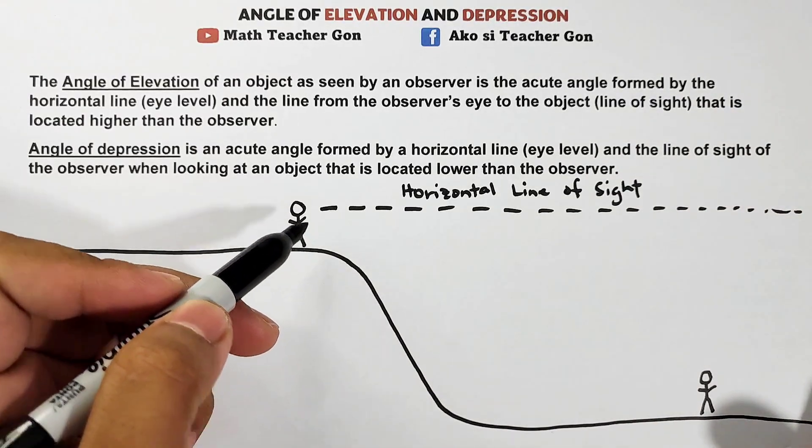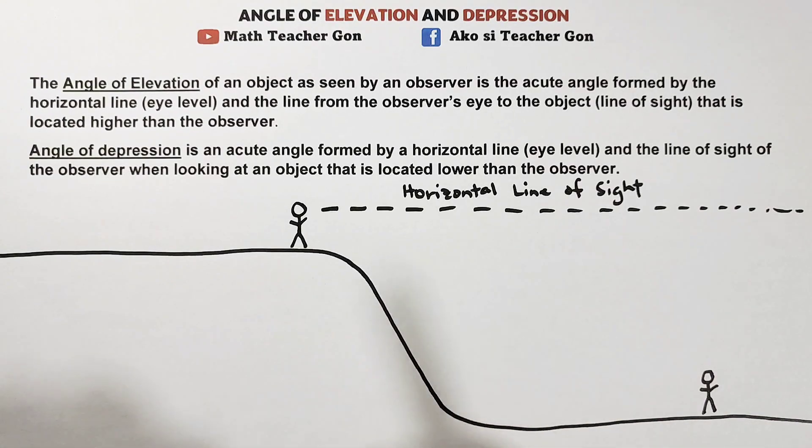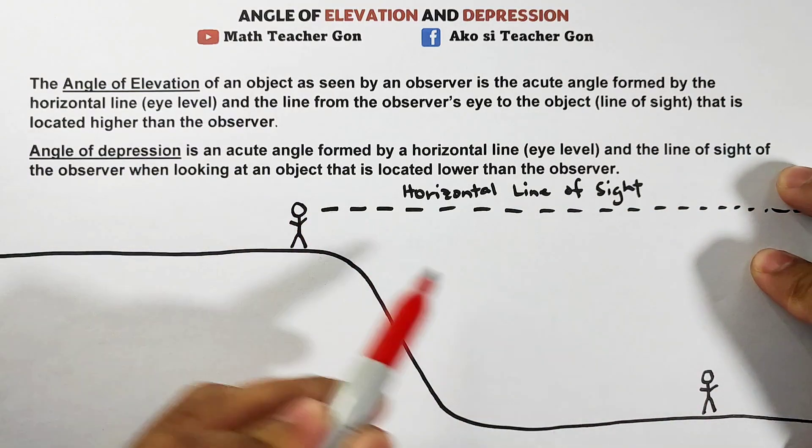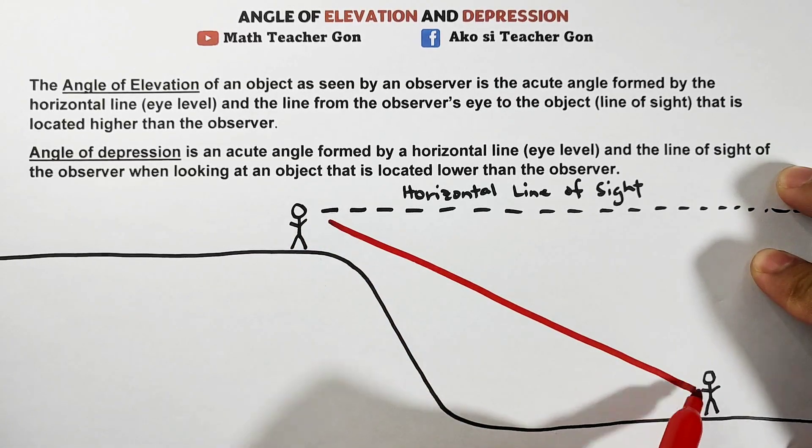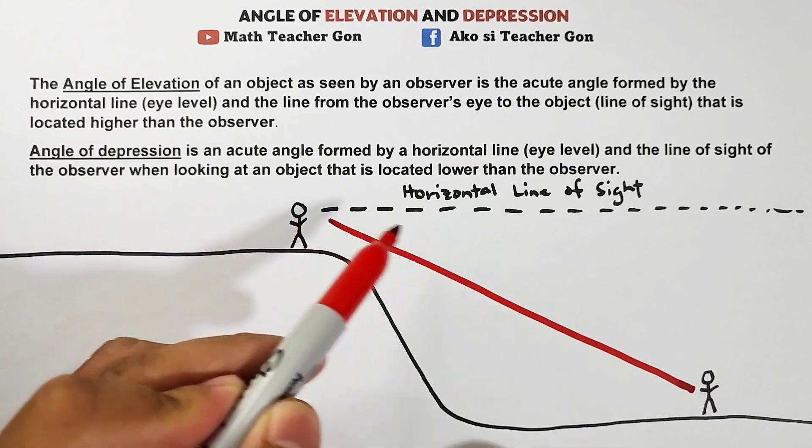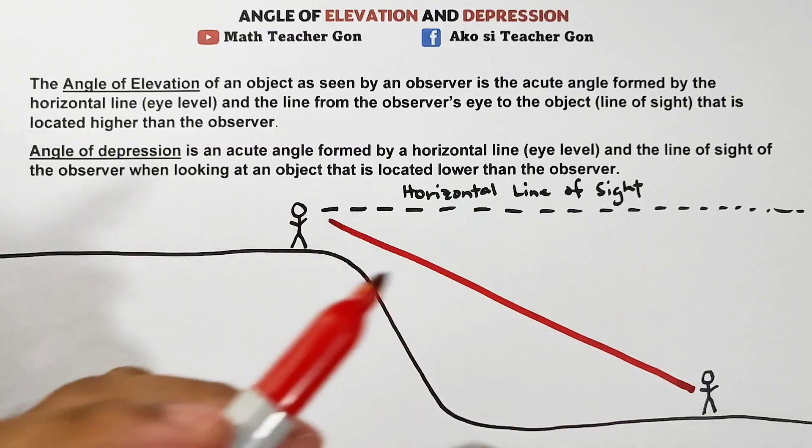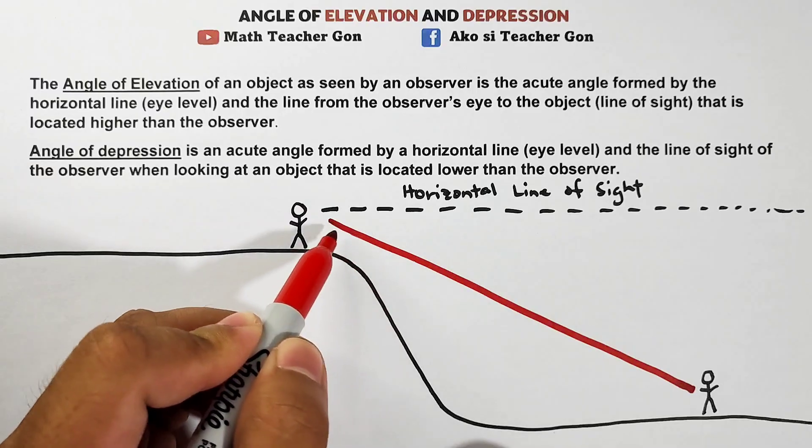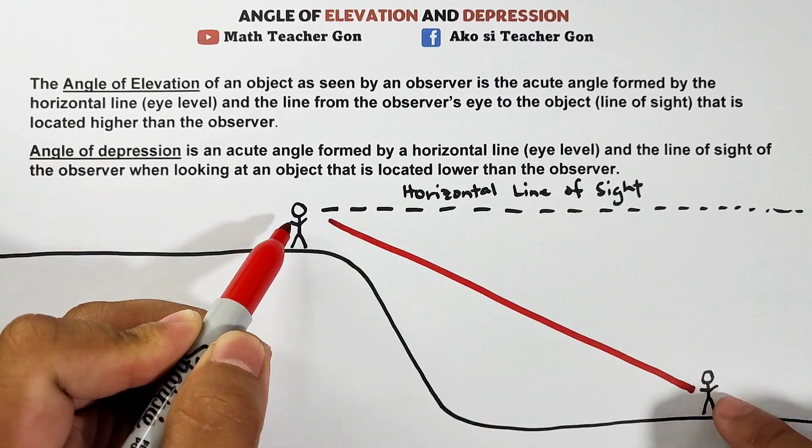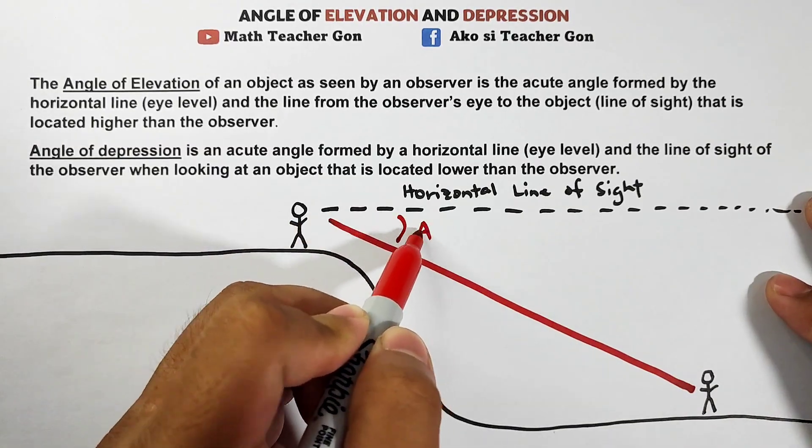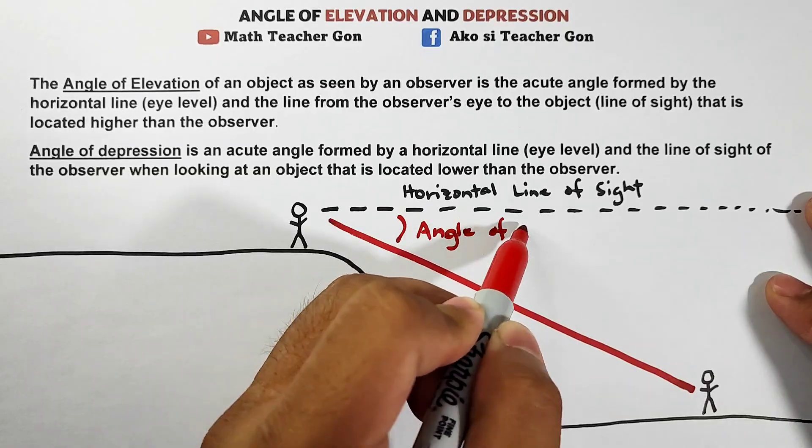Now this person sees their friend below or downhill. When they see their friend it will form a straight line going here. The angle of depression is from this person going to this person, and that angle of depression is the angle between the horizontal line of sight and the line formed when the person looks towards the second person which is downhill. So that's the angle of depression.